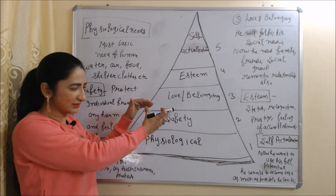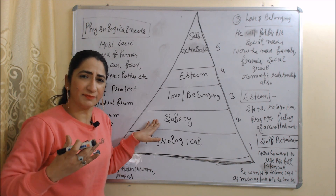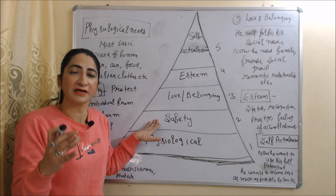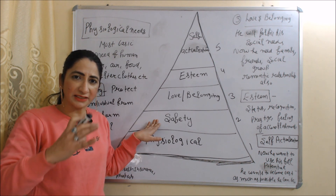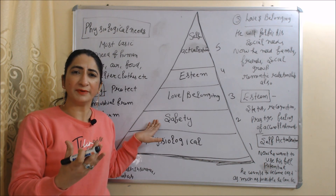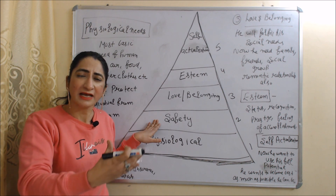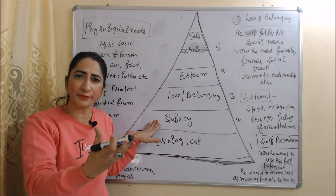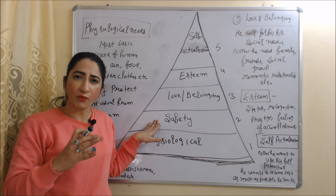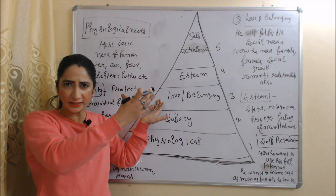Once physiological needs are satisfied, the individual moves to the next higher-order need, which is called safety needs. Safety needs protect the individual from any harm and make them feel secure. For example, saving money for the future, buying health insurance, or buying property so that they feel their future is secure.